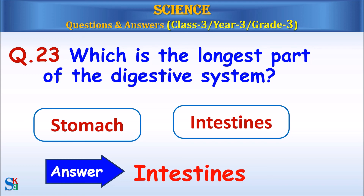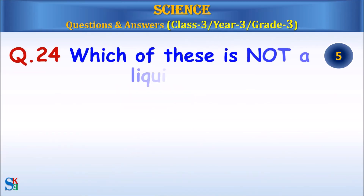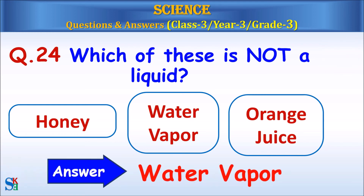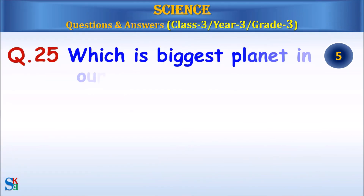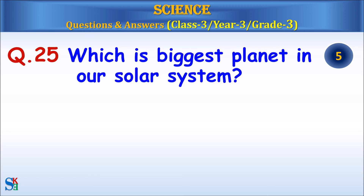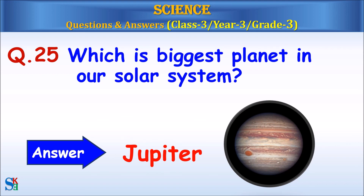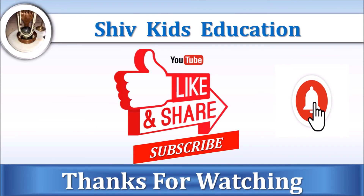Answer: Intestines. Question 24: Which of these is not a liquid — honey, water vapor, or orange juice? Answer: Water vapor. Question 25: Which is the biggest planet in our solar system? Answer: Jupiter. If you like this video, thumbs up, share, and subscribe to my channel Shiv Kids Education, and don't forget to click on the bell icon. Thanks for watching — bye, see you in my next video!